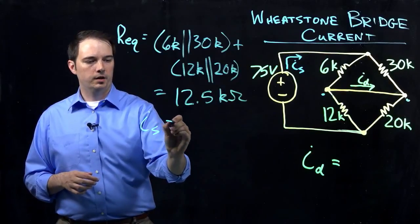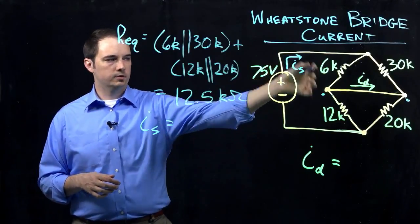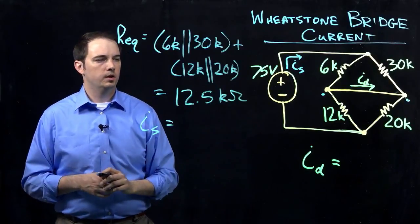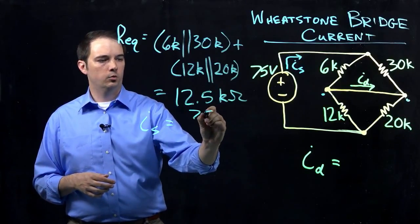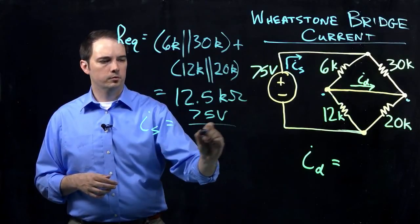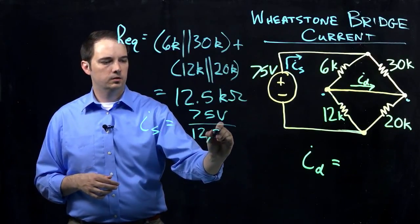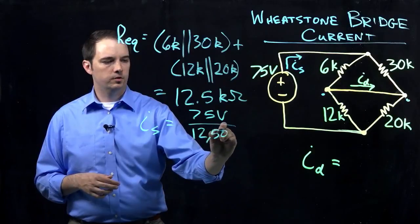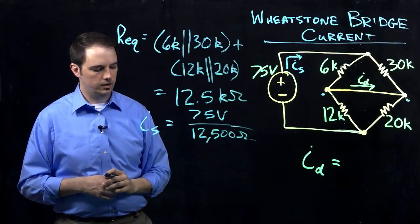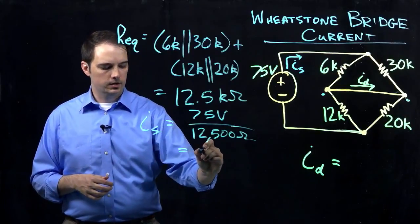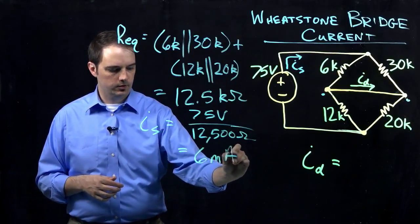Applying Ohm's law to find the total source current: with a single equivalent resistance of 12.5 kilohms, the current flow is just the voltage over the resistance — 75 volts over 12,500 ohms — giving us a total current flow of 6 milliamps.